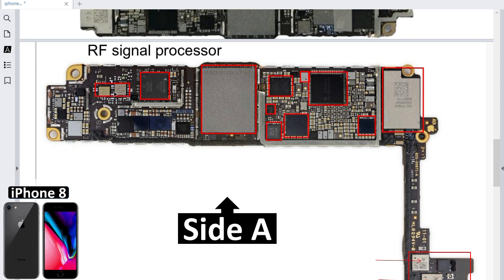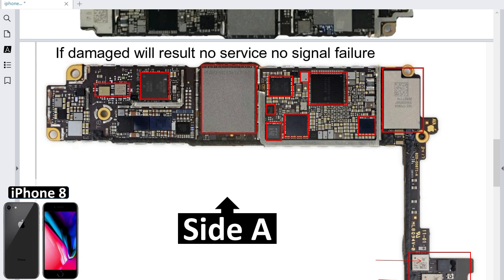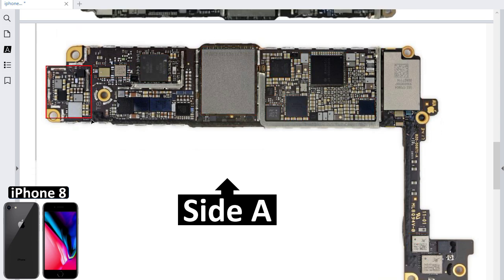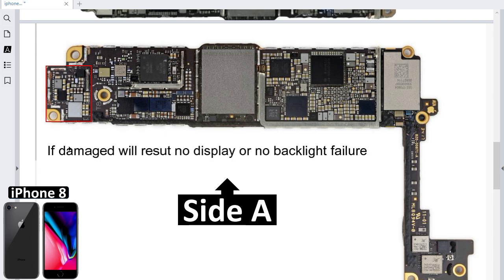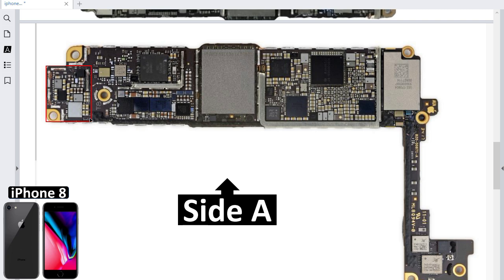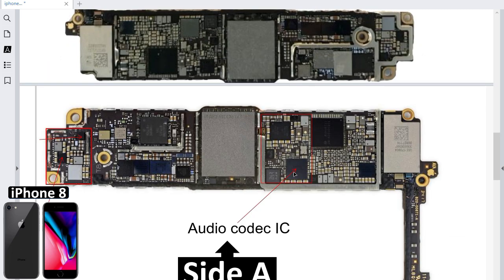If you have no service or no signal, you should check either the antennas or the RF processor. This is the part responsible for the display in this motherboard. If you have any problem with the display, it means you have a problem in this circuit. This is the audio codec — if you have any audio problem in the mic or in the speaker, you should check this IC.